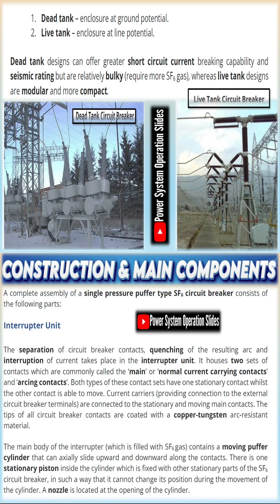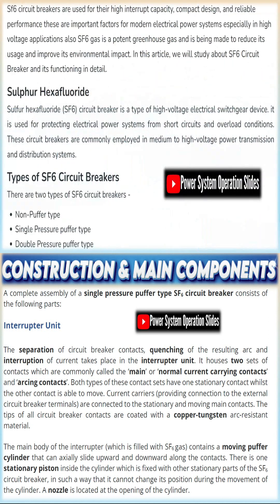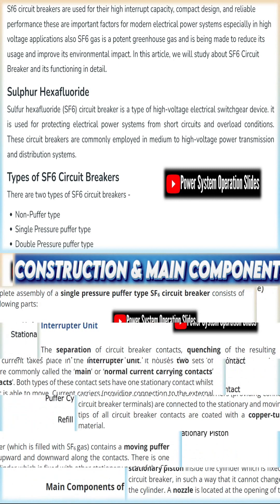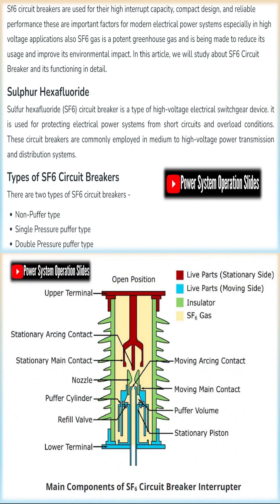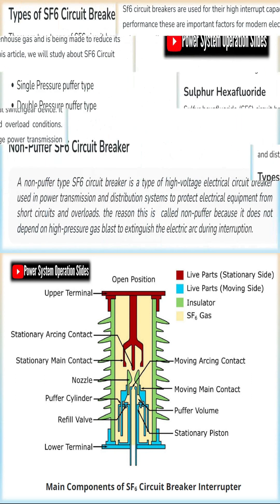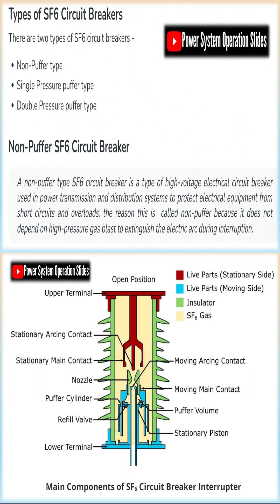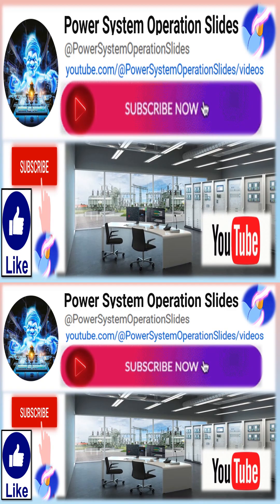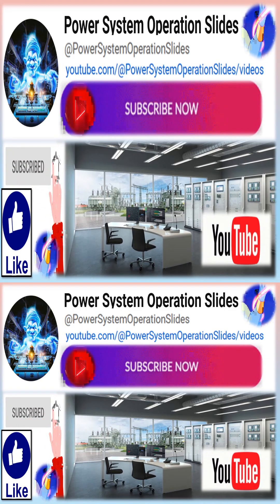Sulfur hexafluoride gas is a colorless, odorless, non-flammable, and chemically stable gas with excellent dielectric and arc-quenching properties, making it ideal for use in high-voltage switchgear. One of its primary applications is in SF6 circuit breakers, which are widely used in modern power systems for protecting equipment by safely interrupting high fault currents.